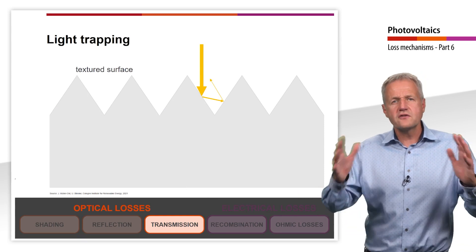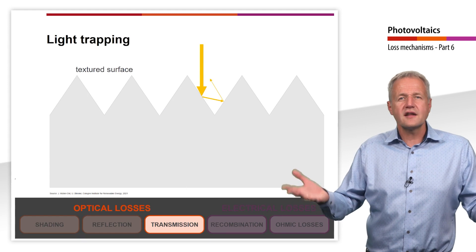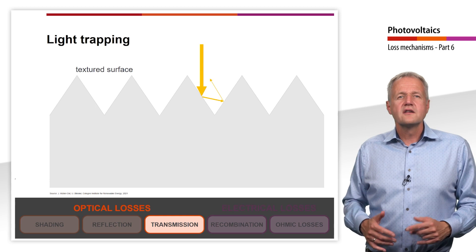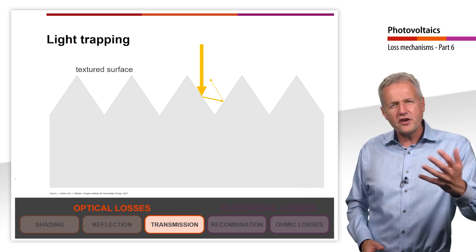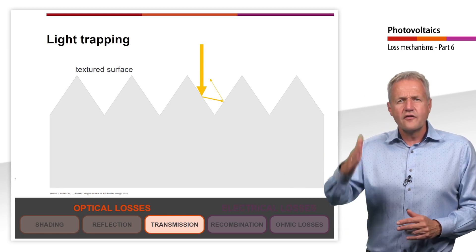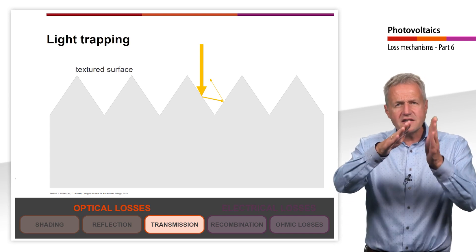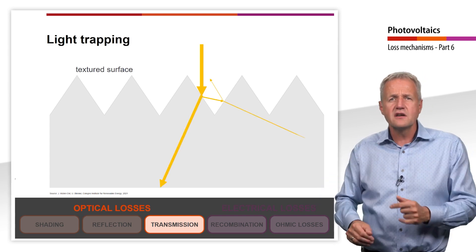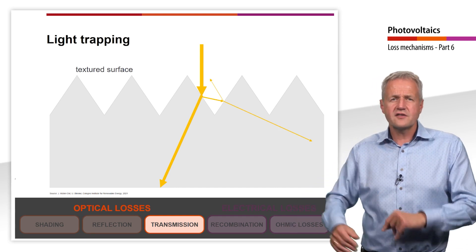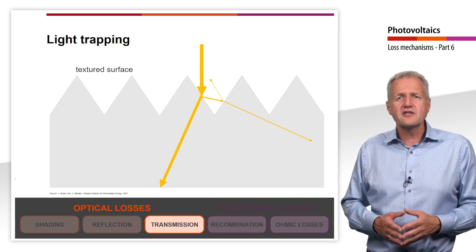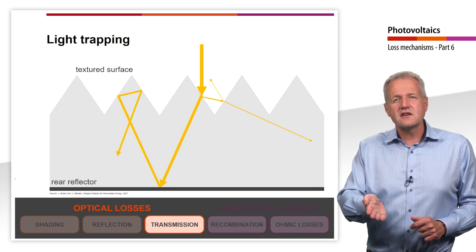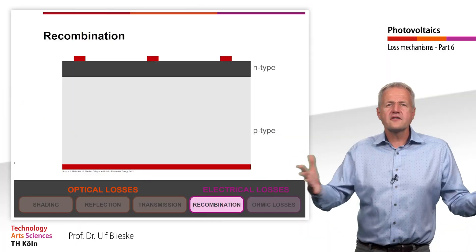Various approaches are used to reduce transmission losses — they all have in common that they keep photons in the semiconductor for as long as possible. This is called light trapping. One possibility is to texture the surface, as we already learned in the context of reflection. Vertically incident light rays are reflected at an angle by the texture and thus travel a longer path through the cell. In addition, a reflective material can be applied to the back of the cell so that light is reflected back into the semiconductor.